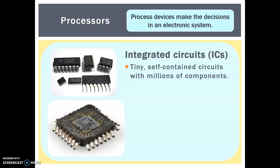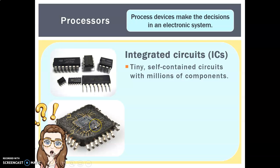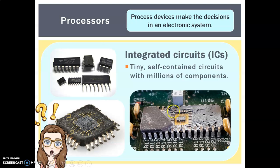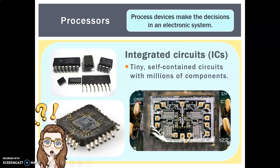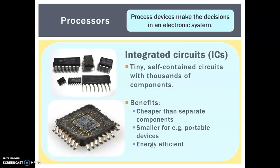If you open one up, you can just about see all the tiny lines inside — just like the copper tracks on our larger circuit board. Zoom in and you can see the fine wires connecting to an incredibly complicated circuit — these are the silicon chips that dictate what's going on. The benefits are that they are cheaper than using separate components, they are tiny which is great for portable devices like mobile phones, and they are also very energy efficient.